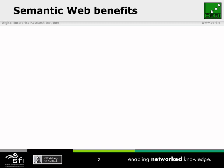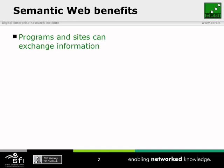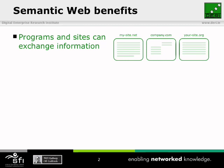Some of the benefits that you will see are that programs and sites can exchange information very easily. For instance, say that you have a site and I have a site, and we work for the same company, and our company wants to keep information about both of us, but doesn't want to have to keep asking us about whether we've changed that information. They can just link to information on my site and link to information on your site, and whenever we update the information on our sites, it will be automatically updated on the company's site.